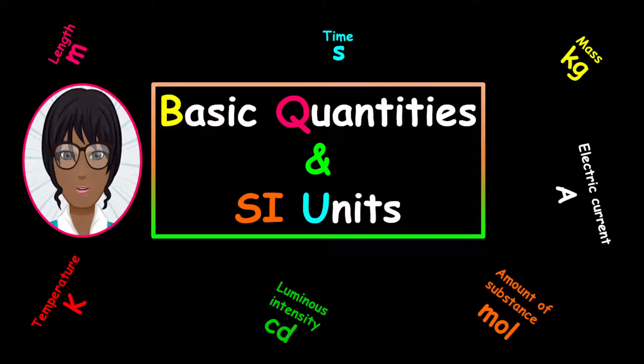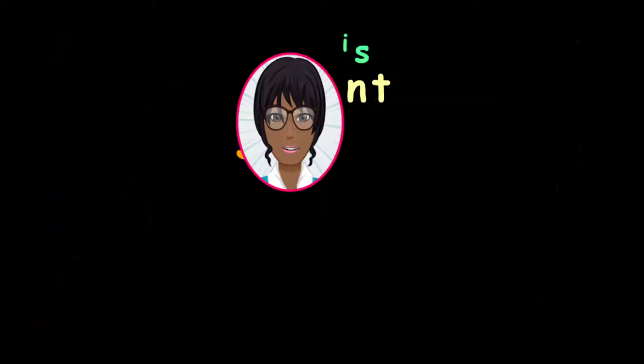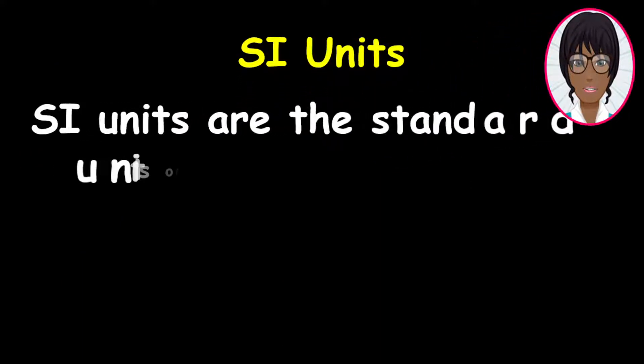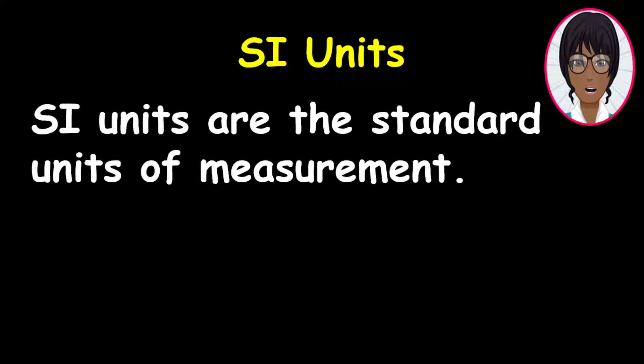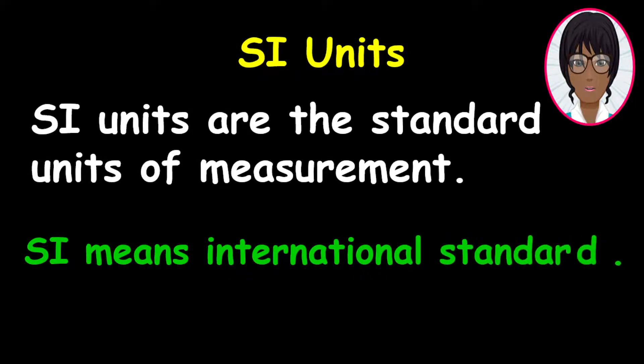Today I want to go through basic quantities and SI units with you. We will be clarifying the difference between quantities and units, then give some examples. Now when we talk about SI units, we are talking about those units that are the standard units of measurement. SI means international standard, which means they are the same all over the world. So no matter where you go, these units are acceptable units of measurement.